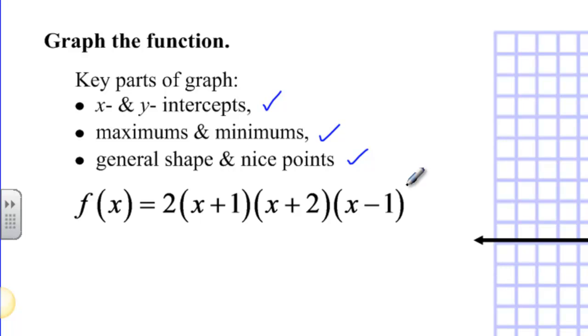And by nice points, I mean like integer points that are easy to graph and fit in our window. Now when we look at this function, f(x) equals two times x plus one times x plus two times x minus one...